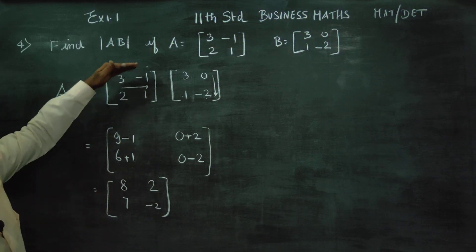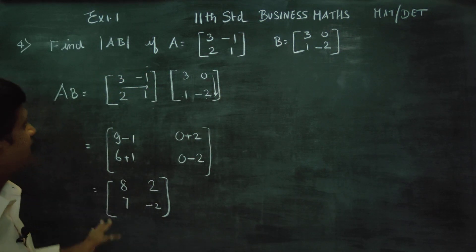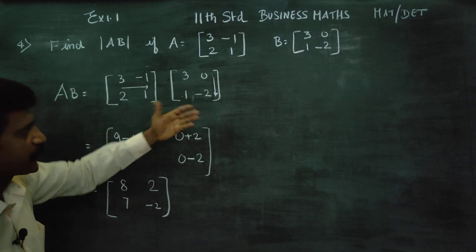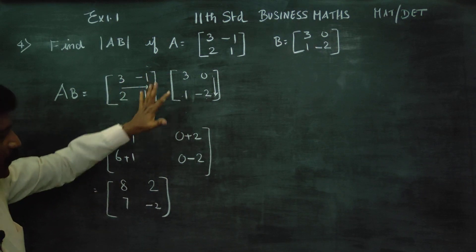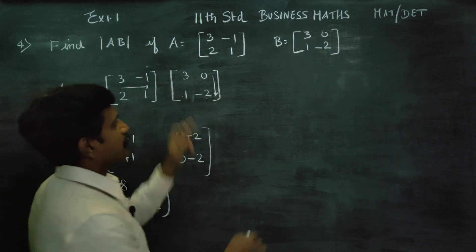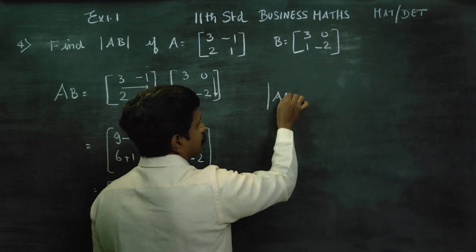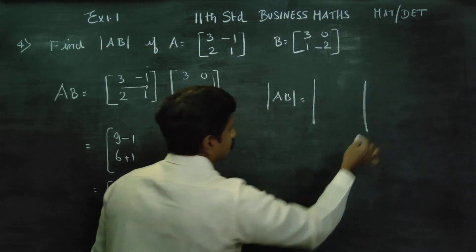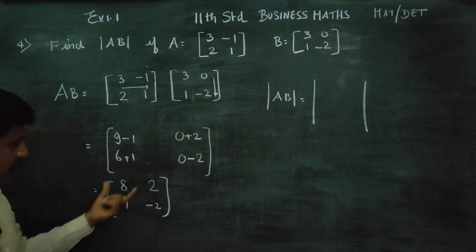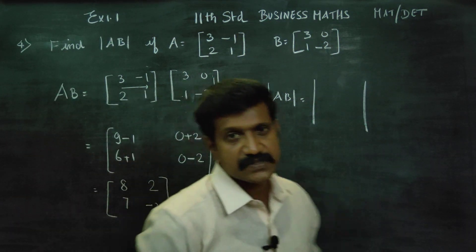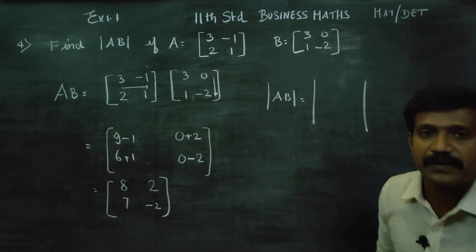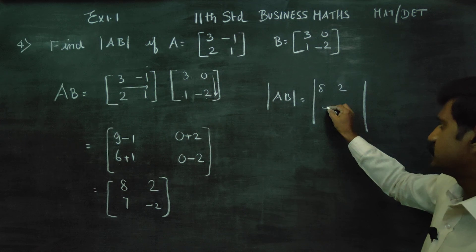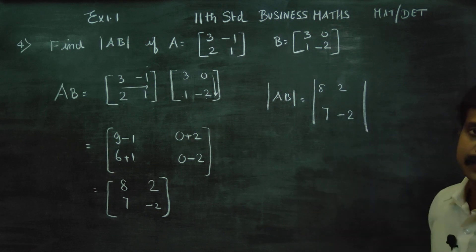This is the 10th standard revision — matrix multiplication is just to revise. After multiplication, determinant of AB: the matrix AB is 8, 2, 7, minus 2.